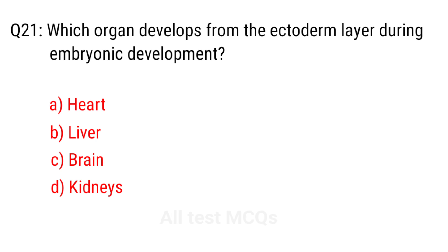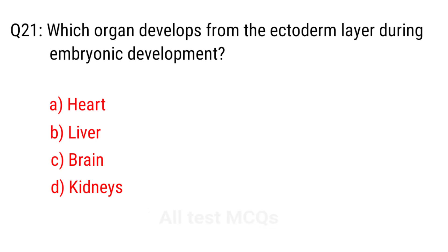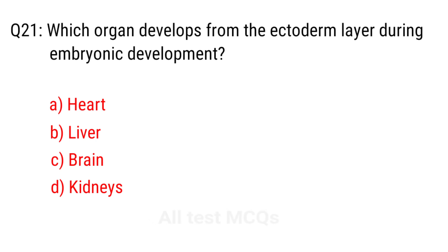Q21. Which organ develops from the ectoderm layer during embryonic development? The right answer is option C: Brain.